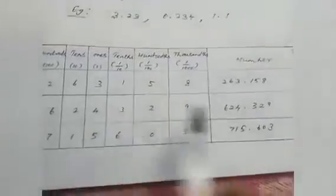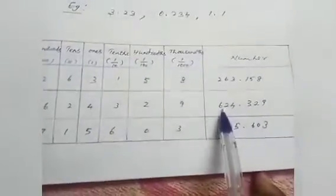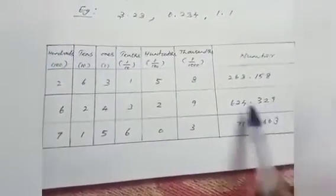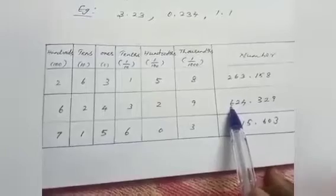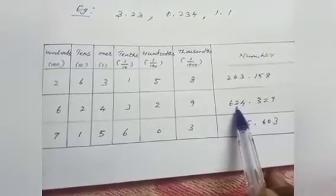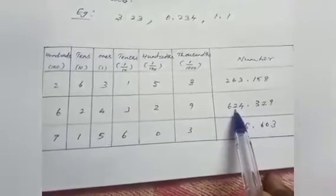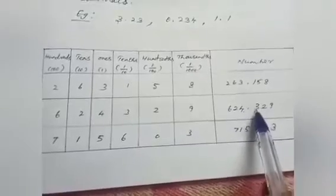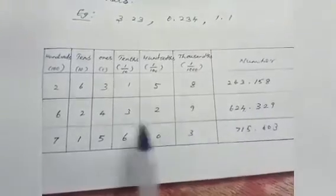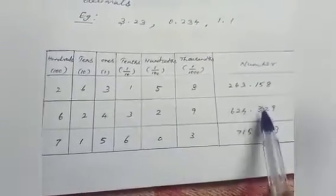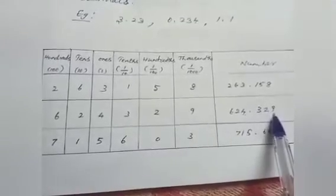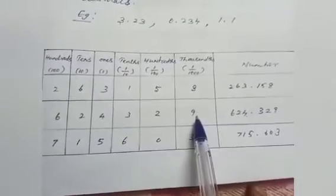Another example: 624.329. The place value of 6 is hundreds, 2 is tens, 4 is ones, 3 is 3 tenths, 2 is 2 hundredths, and 9 is 9 thousandths.